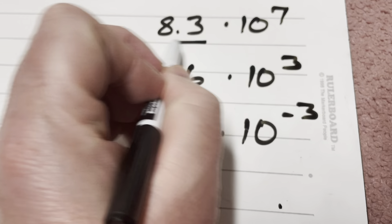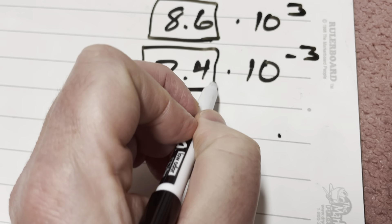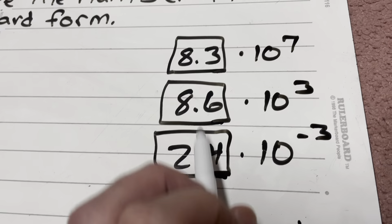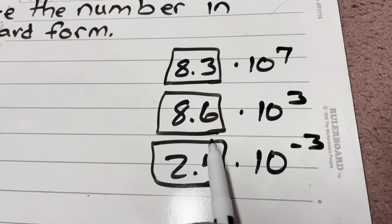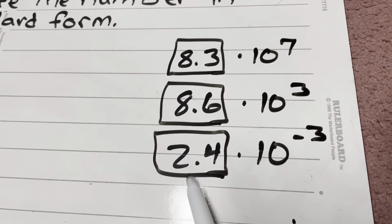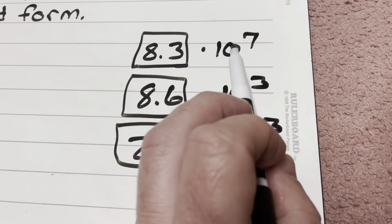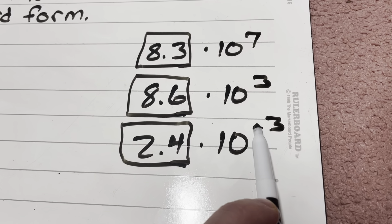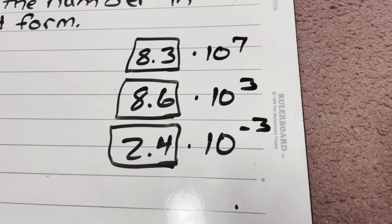First of all, this first number has to be no less than 1 and it has to be less than 10. This number can be equal to 1 — it can be equal or greater than 1 — but it has to be less than 10. All of these numbers here are equal or greater than 1 and they're less than 10. The other part of scientific notation means it has to be written as a power of 10 with an integer exponent, like 10 to the power of 7, 10 to the power of 3, or 10 to the power of negative 3.